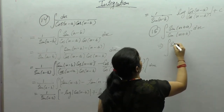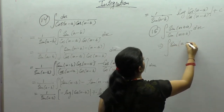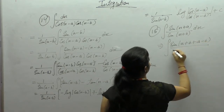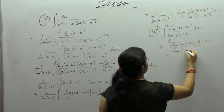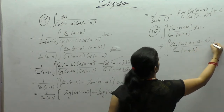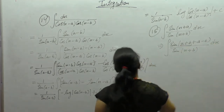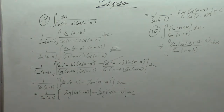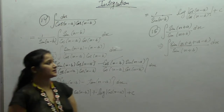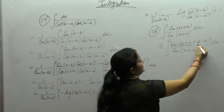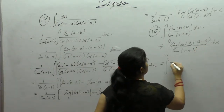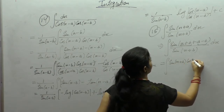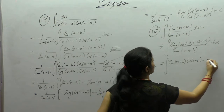With constant b, we add and subtract the constant term b in the numerator. Take x plus b as one term and a minus b as another, and apply the formula sin(a+b) = sin a cos b + cos a sin b.